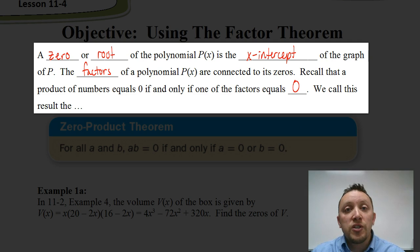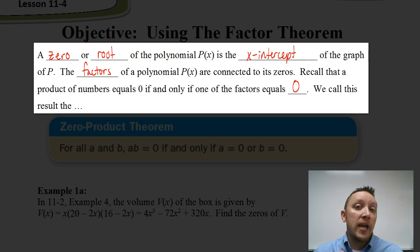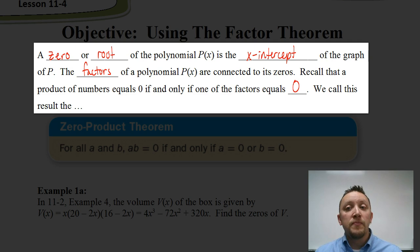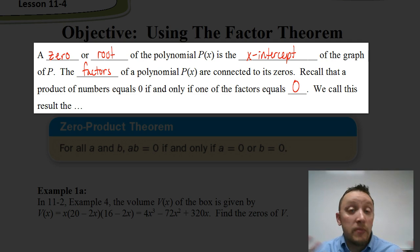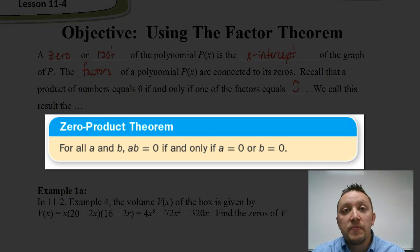First off, we have these two terms: zeros and roots. Remember that a zero and a root are the same as the x-intercepts of a polynomial — the x-intercept from a graph of a polynomial. The factors of a polynomial are connected to its zeros. A product of numbers is always going to be zero as long as one of the numbers is zero, which gives us the zero product theorem.